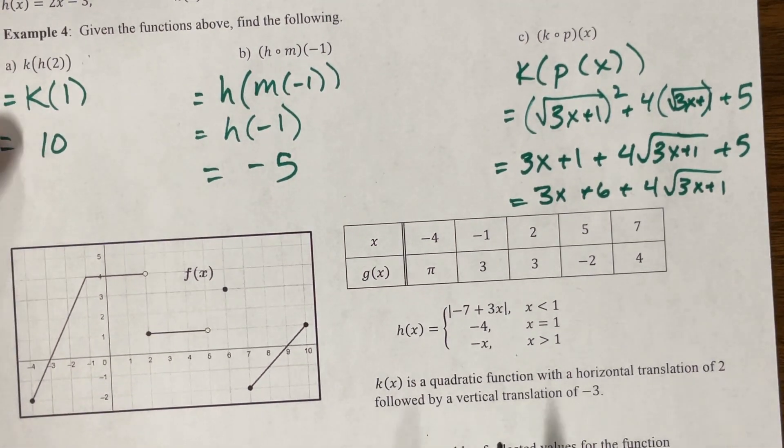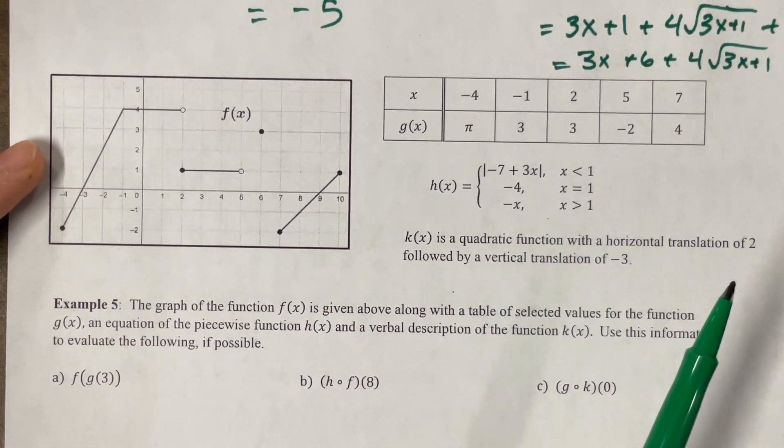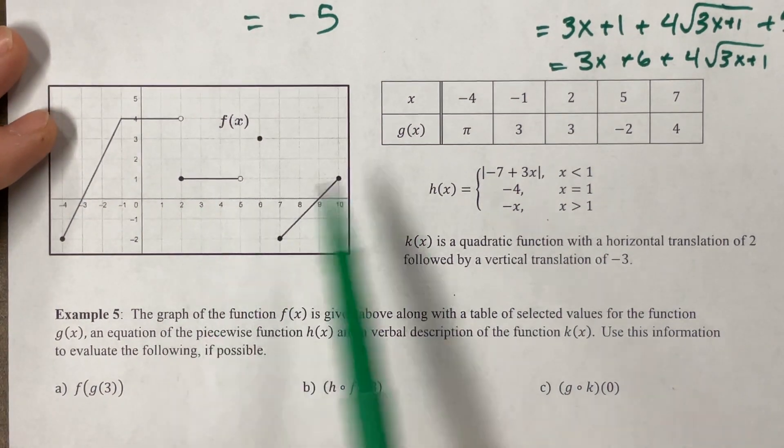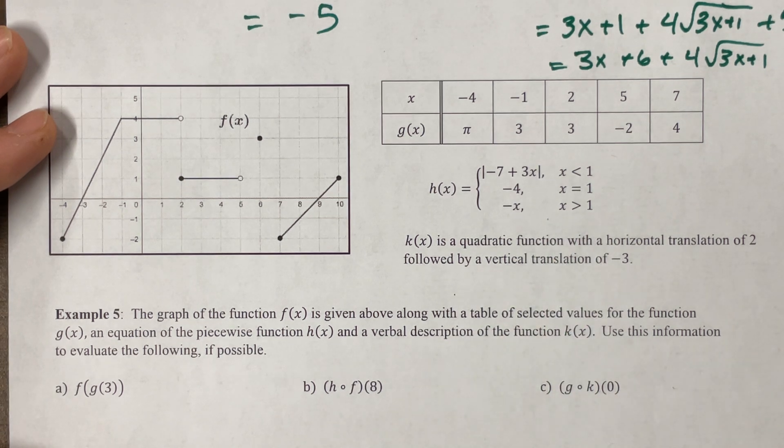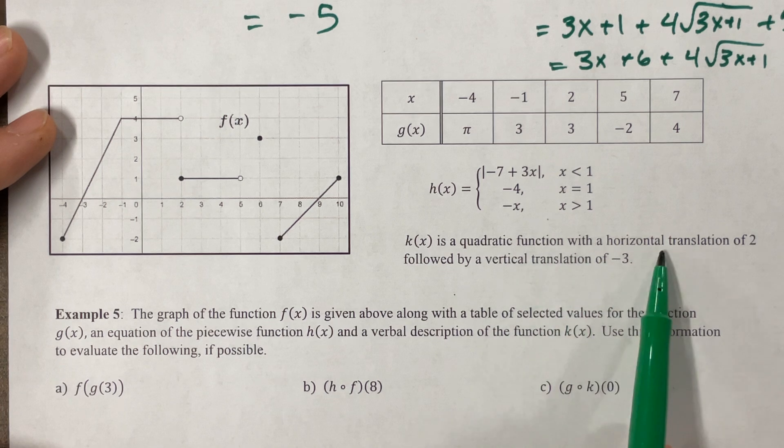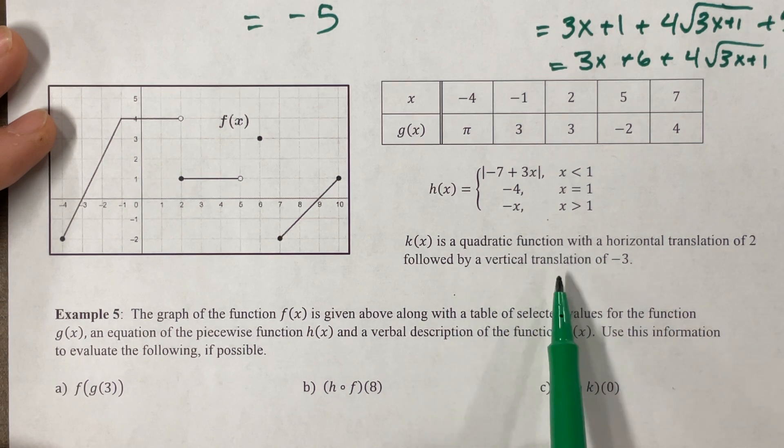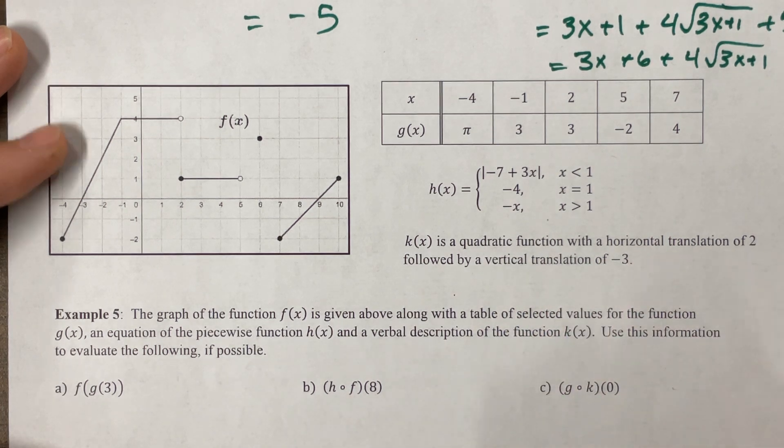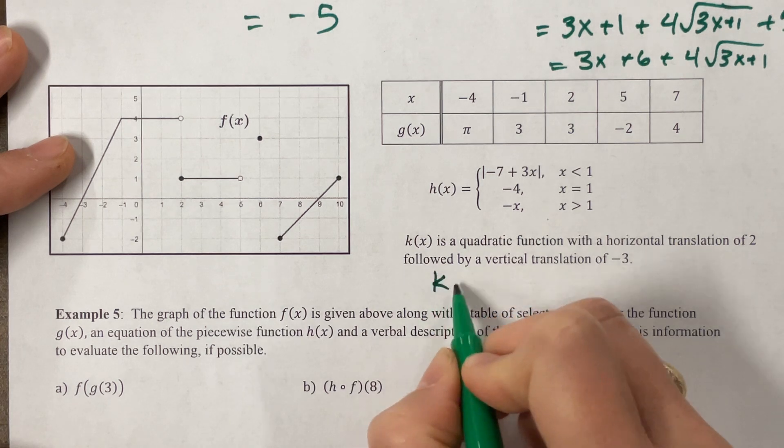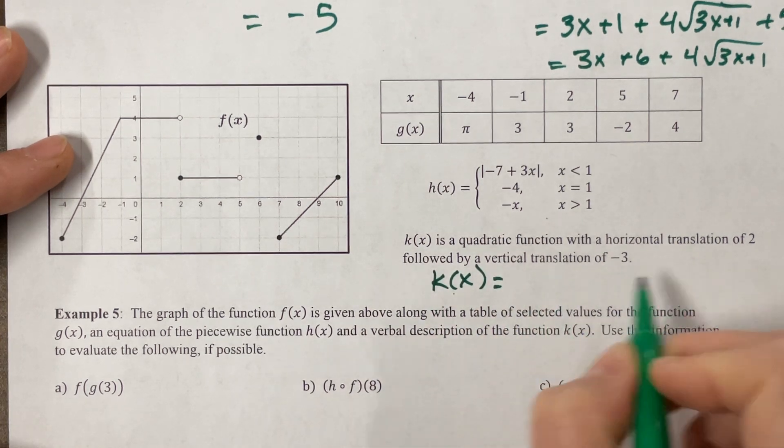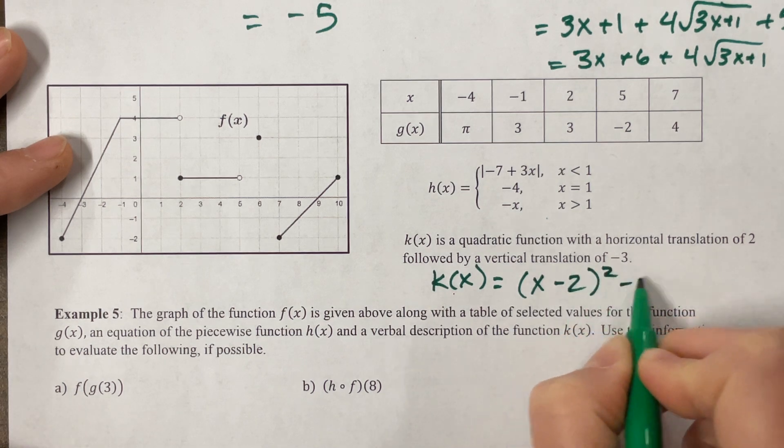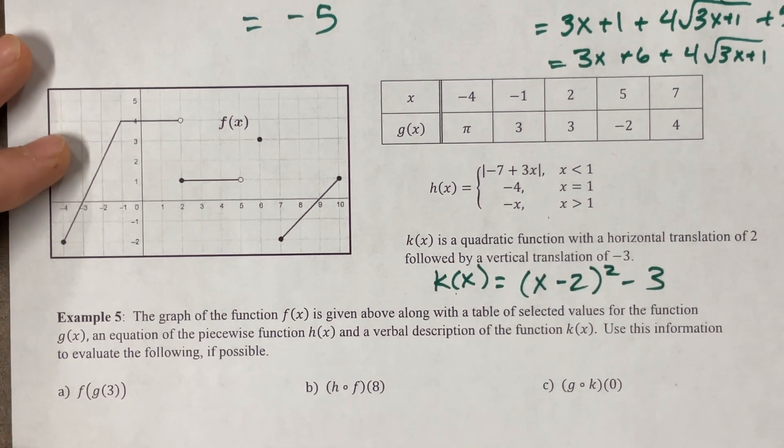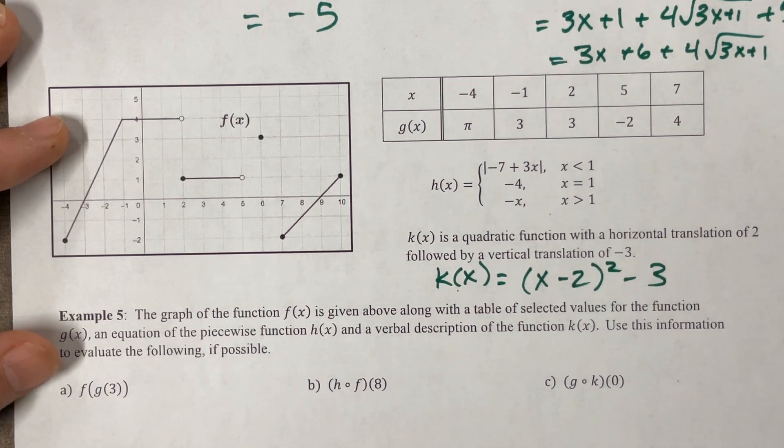Now on this one, we've got a few different functions that he's asking us to look at. F is a graph. G is a chart. And h is a piecewise equation. And k describes something. A quadratic function with a horizontal translation 2 followed by a vertical translation of negative 3. So this would be k of x equals x minus 2 squared minus 3.